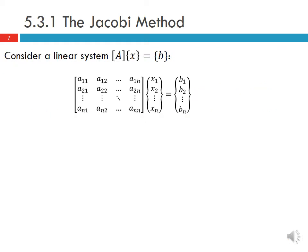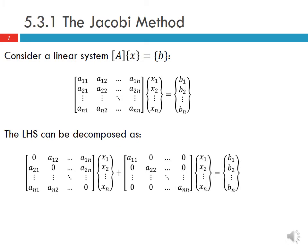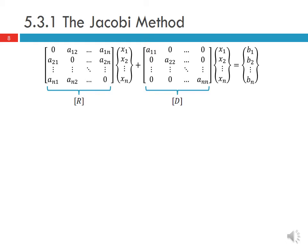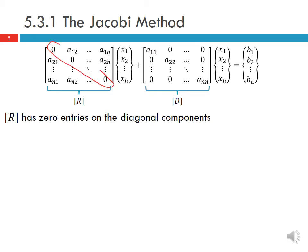Consider a linear system Ax equals b. The left-hand side Ax can be decomposed as shown here, where one part we call R and the other we call D, so we have Rx plus Dx equals b, where A equals R plus D. R has zero entries on the diagonal components, so all diagonal components are equal to zero. D is a diagonal matrix, so the diagonal components are the only non-zero components. Basically, we take all the diagonal components of A to form diagonal matrix D, and everything else becomes R.